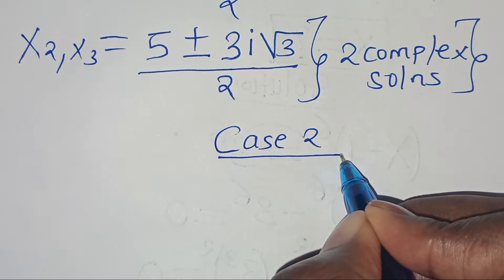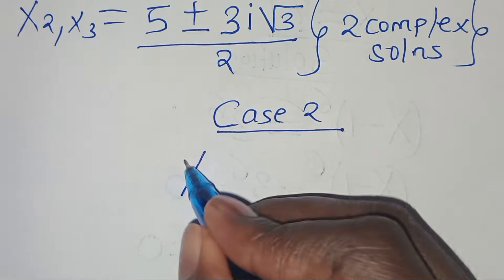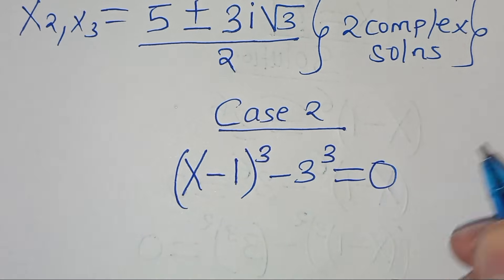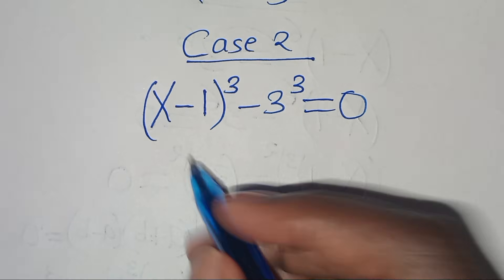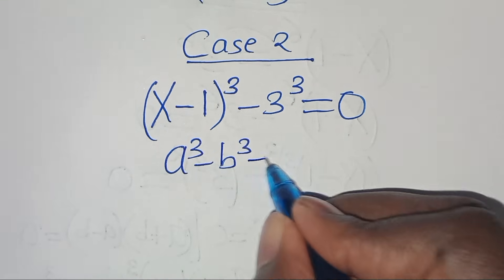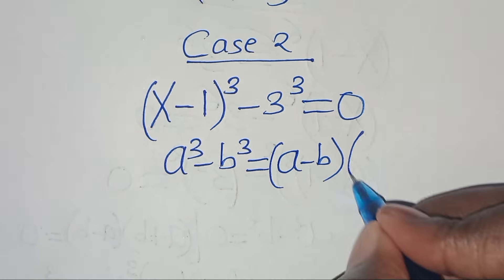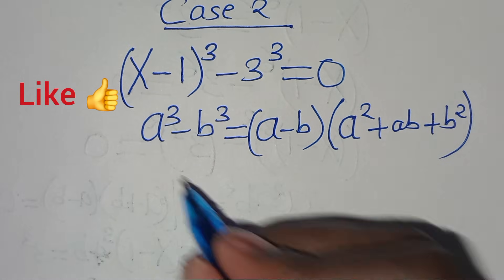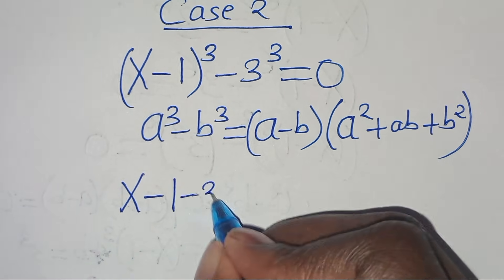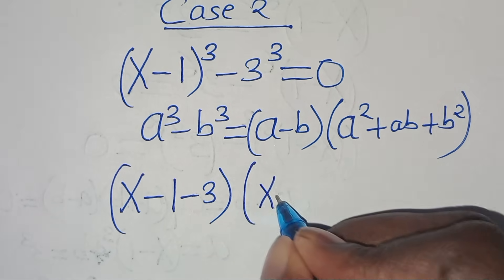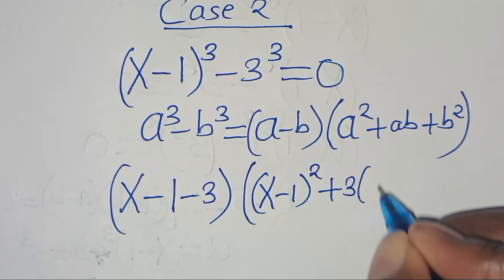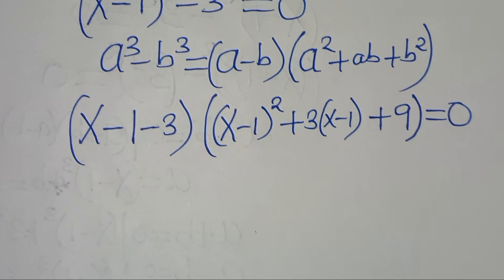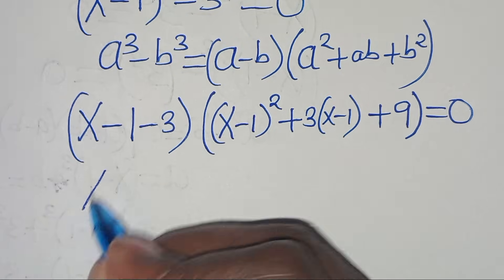In Case 2, we have (x minus 1)^3 minus 3^3 equals 0. This is of the form a^3 minus b^3, which can be expressed as (a minus b)(a^2 plus ab plus b^2). So we have (x minus 1 minus 3) times [(x minus 1)^2 plus 3(x minus 1) plus 9] equals 0. This simplifies to (x minus 4) times the bracket equals 0.